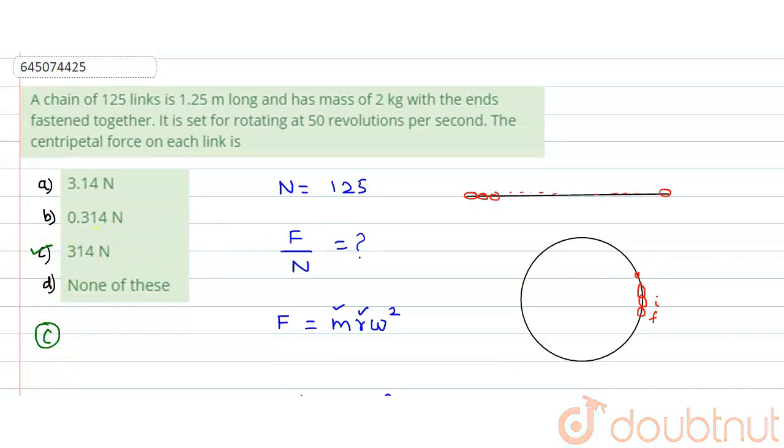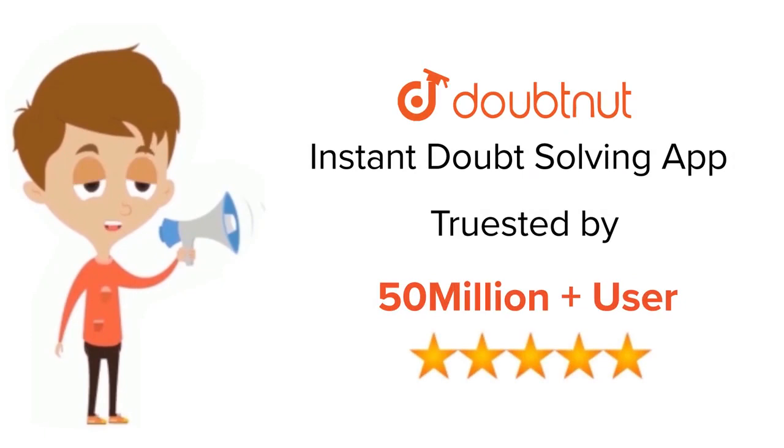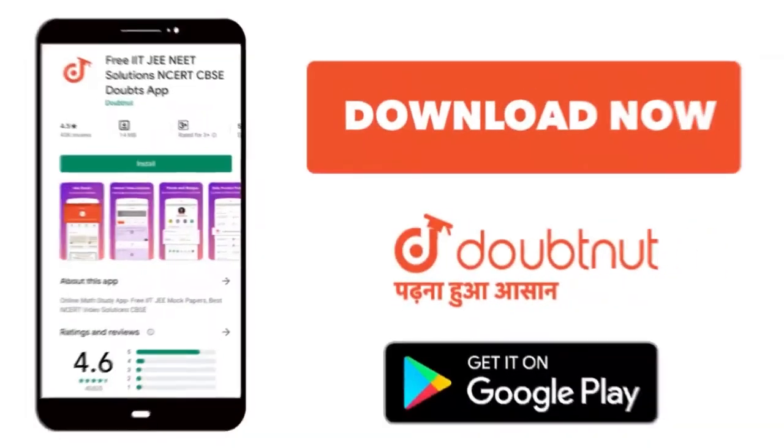So which option is the correct option? 314 newtons. C is our correct option. Hope you understood the solution. Thank you. For class 6 to 12, IIT-JEE and NEET level, trusted by more than 5 crore students, download Doubtnet app today.